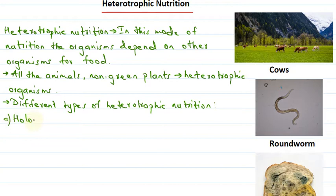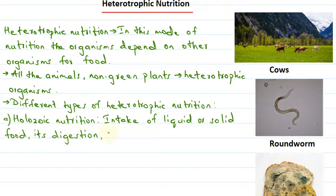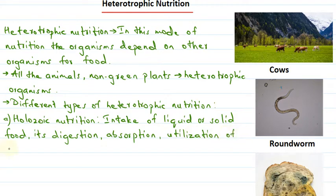The first type is holozoic nutrition. In holozoic nutrition, this involves intake of either liquid or solid form of food. After intake, the food gets digested — that is, the process of digestion is included. Then there is absorption of the digested food, and after the food gets absorbed, it is utilized. The energy obtained from the food is utilized.